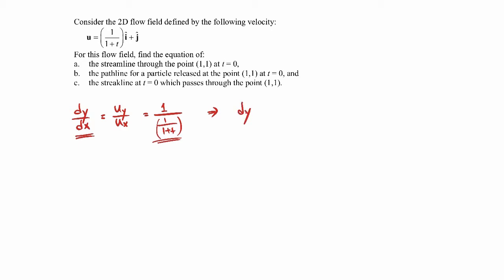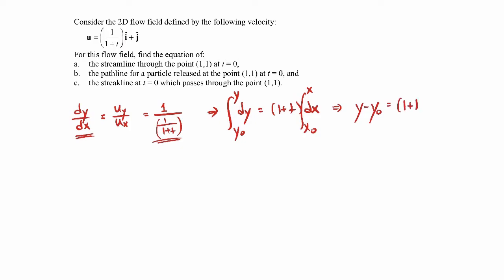We'll have dy is equal to 1 plus t times dx. We'll go ahead and integrate both sides as we go from some initial position to some final position. Notice that I don't keep the t inside the integral for x, because this is a function of t, not a function of x, so we can pull it outside the integral. This will just become y minus y-naught is equal to 1 plus t times x minus x-naught. So that's our general equation for a streamline.